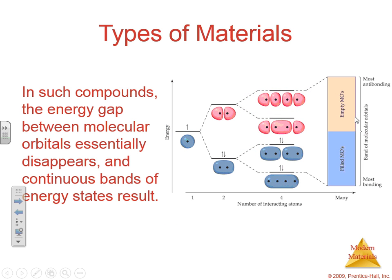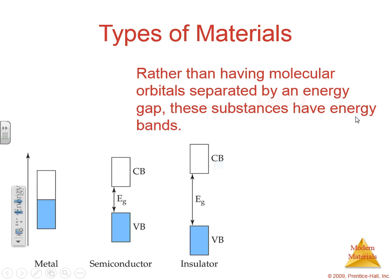These first handful of slides are important. In such compounds, the inner energy gap between the molecular orbitals essentially disappears, and what we have is a continuous band. This continuous band is what gives solids their conductivity. When the energy band is essentially zero, the conductivity is great — that's a metal.